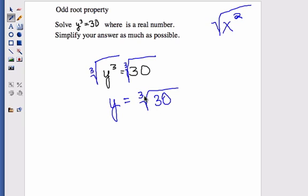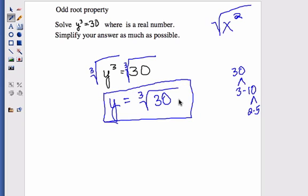Now basically remember, to take the cube root of 30, I need to look at this and say, is there any number multiplied by itself three times that gives me 30? The answer is no. You can always break it down, three times ten, ten is two times five. There's not three of the same number multiplied together, so it can't be simplified. And that's simply my answer, y equals the cube root of 30.